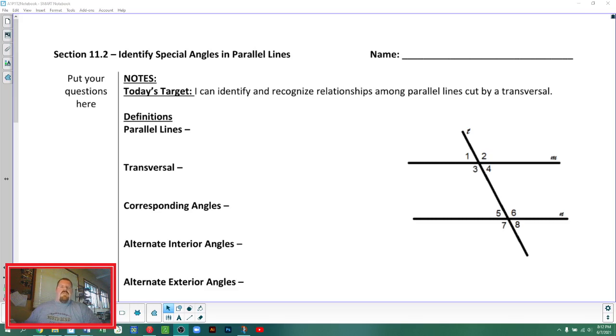Hello and welcome to the section 11.2 lecture today for Algebra 1, Part 1. Today we're going to be looking at, or I guess start looking at, special angles that happen when we have parallel lines. A couple things to get started. We've got a lot of definitions today because that's really what drives the conversation.